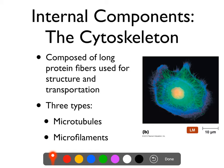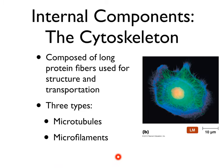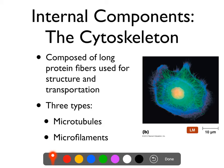The cytoskeleton is composed of long protein fibers, and there are three varieties of these protein fibers: microtubules, microfilaments, and intermediate filaments.